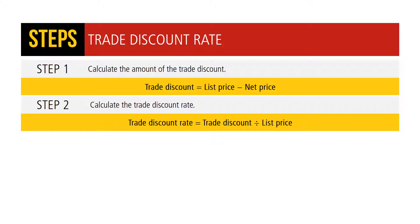To calculate the trade discount rate, follow two steps. Step 1: calculate the amount of the trade discount — trade discount equals list price minus net price. Step 2: calculate the trade discount rate — trade discount rate equals trade discount divided by list price.